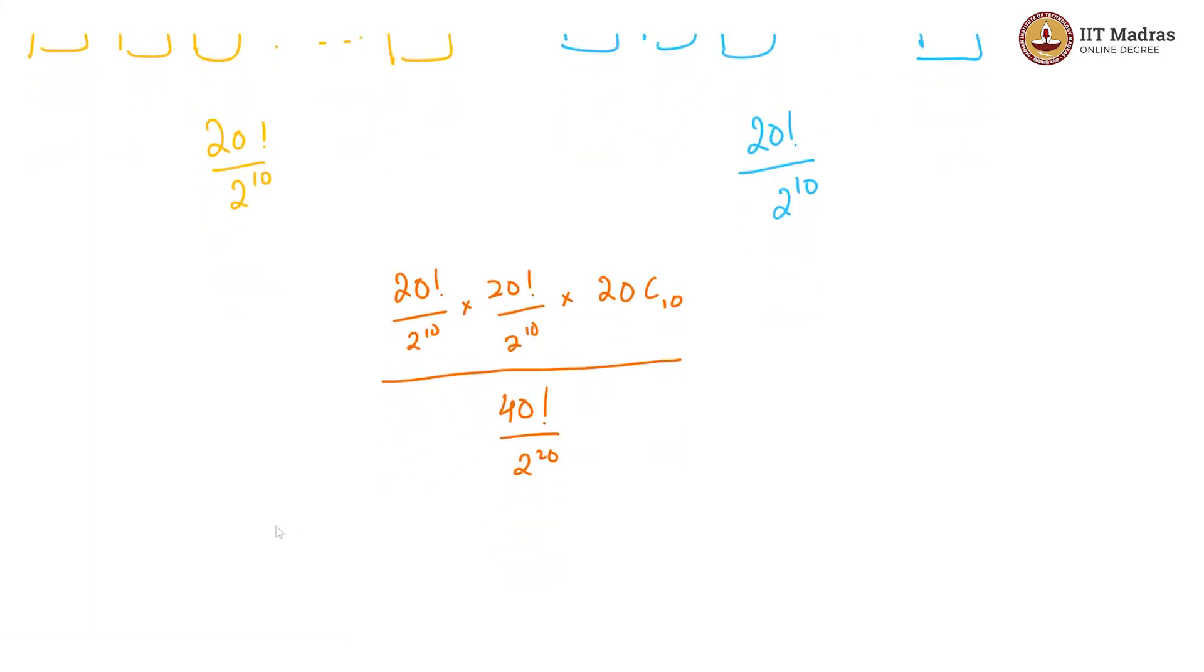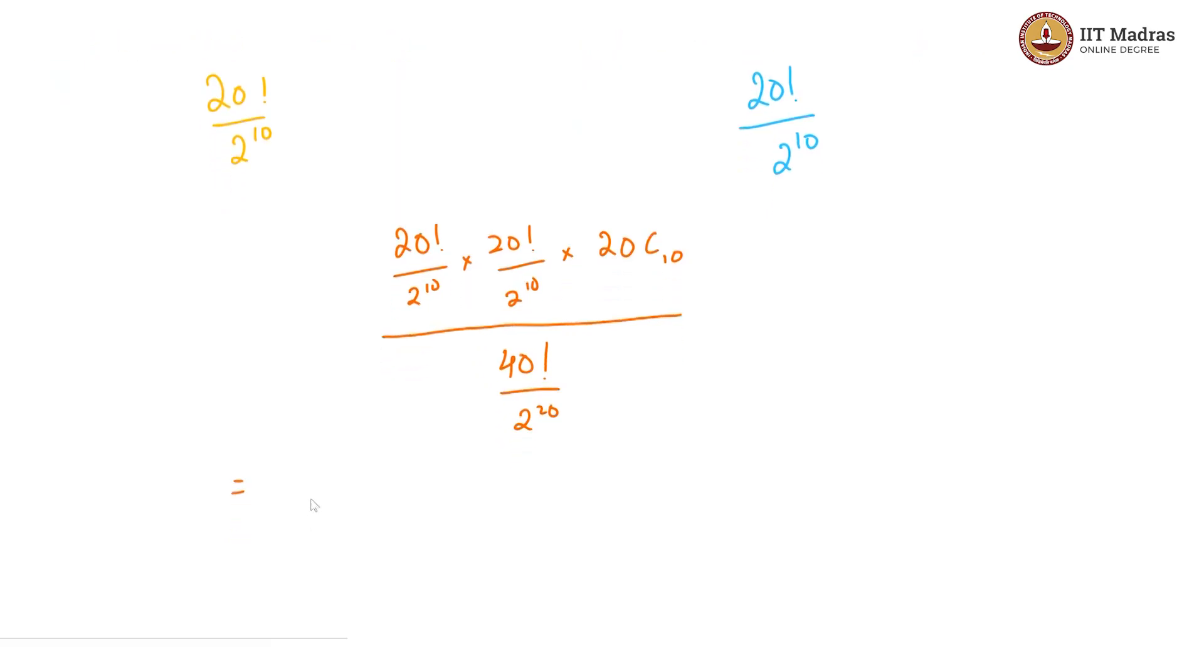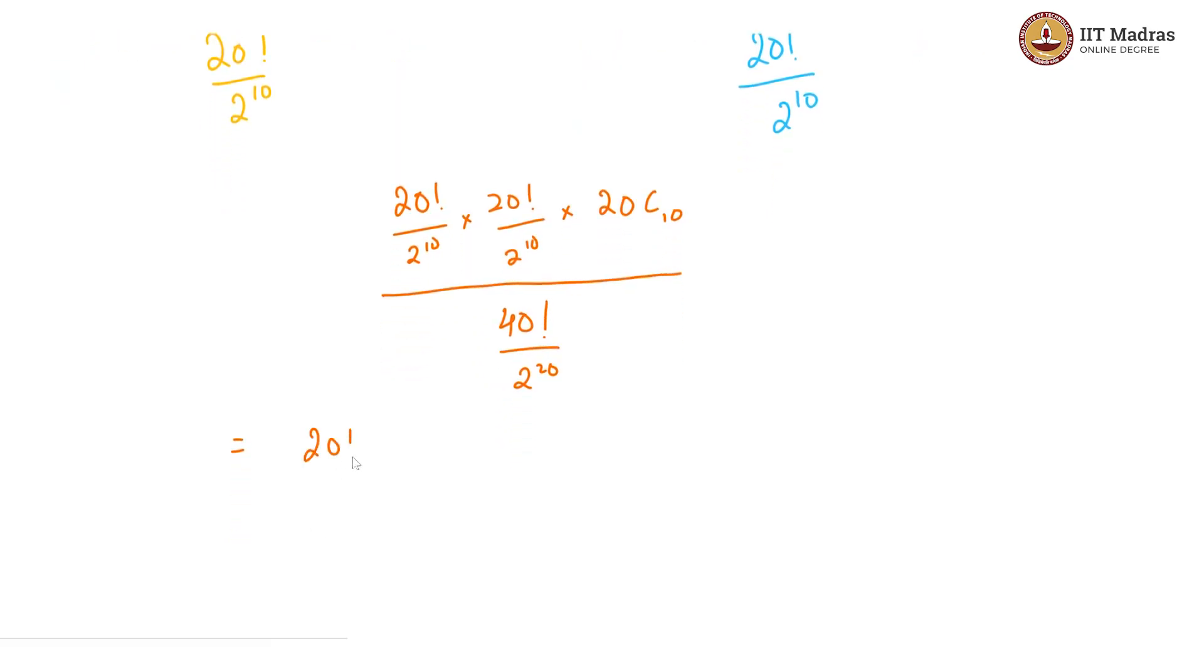This gives us the simplification would be 20! / 2^10 × 20! / 2^10 × 2^20 / 40! × 20! / (10! × 10!).